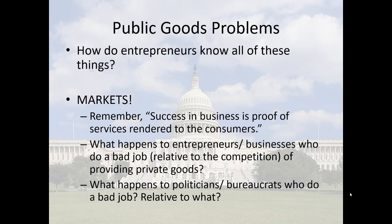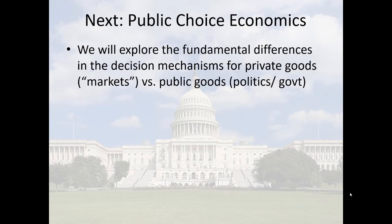We can compare the feedback that exists for entrepreneurs who do a bad job providing products versus what happens to politicians who do a bad job providing public goods. There is feedback in government and politics, but at best it's attenuated — not as immediate, not as sharp, not as punitive as the feedback for entrepreneurs in a market process. The ultimate negative feedback for entrepreneurs is business losses and failure, which is much rarer for agents in government. This brings us to what we call public choice economics. Over the next few lectures, we'll explore these differences in greater detail between the decision mechanisms for private goods in the market sphere versus those for public goods. See you soon.